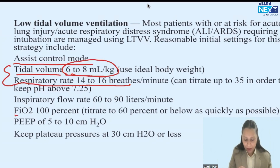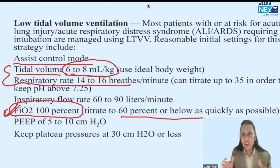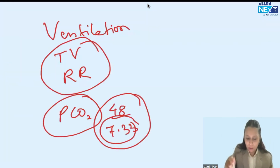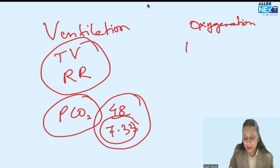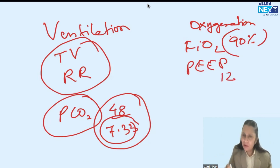Coming to oxygenation — normally we start with FiO2 of 100%, but we try to bring FiO2 below 60% as quickly as possible, because above 60% FiO2 is a toxic FiO2 which itself can contribute to ARDS. Initially we start with 100%, then decrease it as fast as possible. For PEEP, we start with 5 to 10 cm of water and gradually increase if oxygenation is not maintained. In our patient, FiO2 was 90% — a high FiO2 — and PEEP was 12 cm of water, which is good.